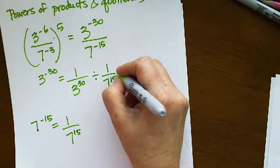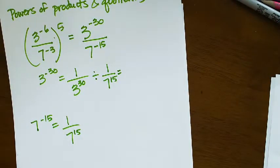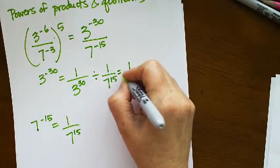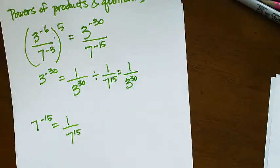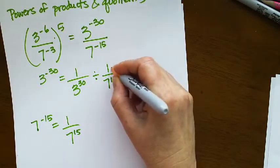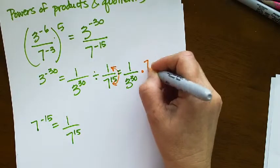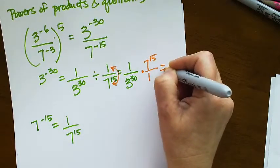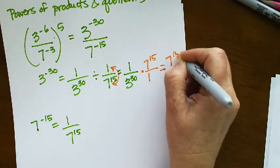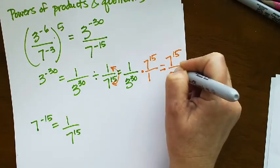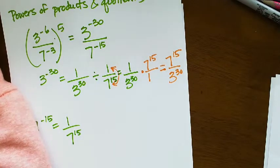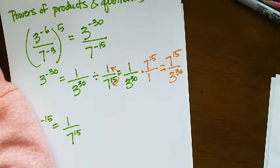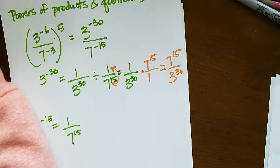When I'm dividing fractions, I can multiply by the reciprocal. So the first term stays the same, but I'm going to change this over to multiplying by the reciprocal, 7 to the 15th over 1. So that would give me 7 to the 15th over 3 to the 30th. And I'm wondering if I can just type it in like that. It's multiple choice. So that is the answer choice that pops up.